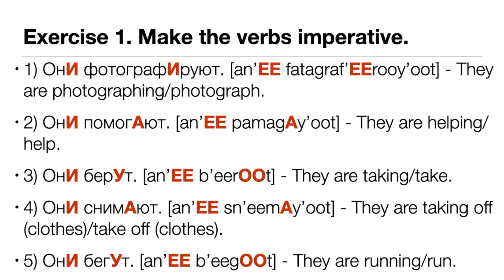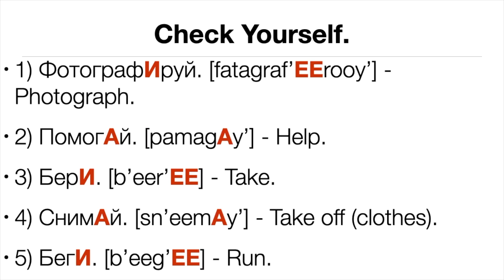Pause the video and make the verbs imperative. All the verbs are already given in the plural third-person form. The next slide will help you check yourself. Check yourself: (1) Фотографируй — photograph. (2) Помогай — help. (3) Бери — take. (4) Снимай — take off. (5) Беги — run.